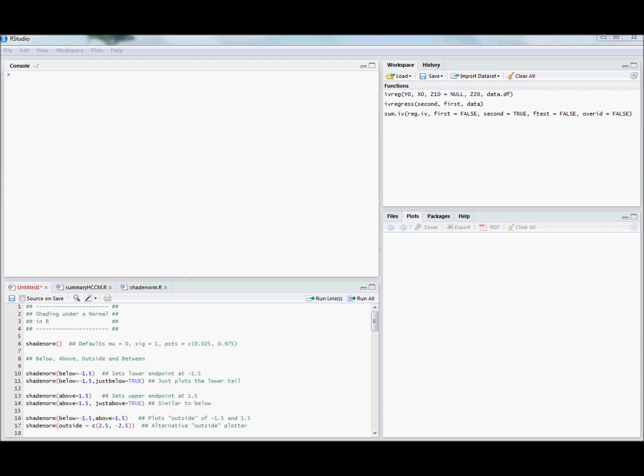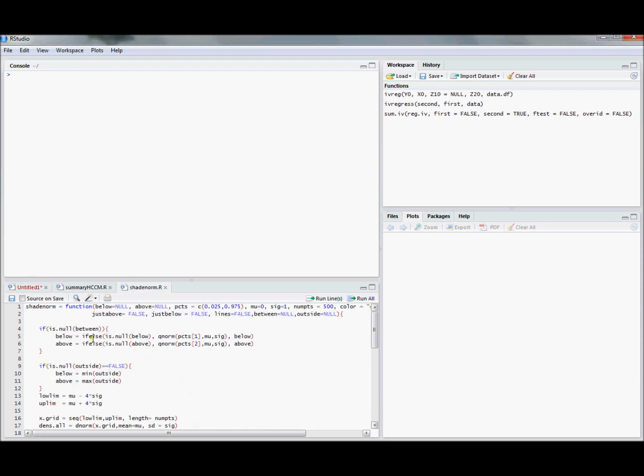There's going to be a link in the description where you can download the code for this function. Once you do that, copy it into a script file like I've done here, and you can run that entire script file. Running that script file will load a function into R.